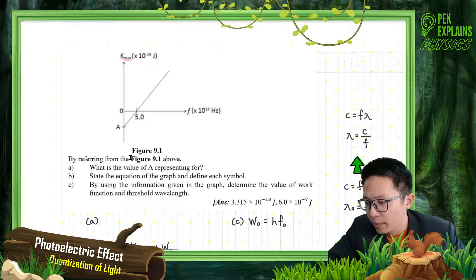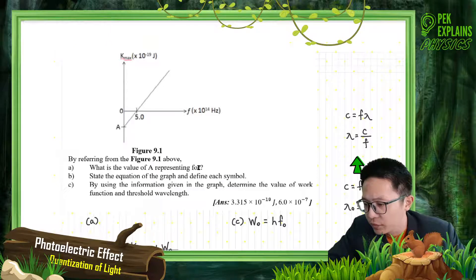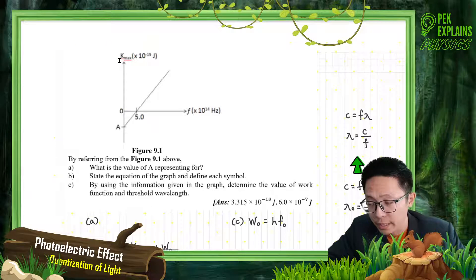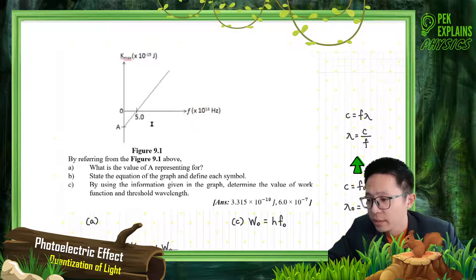By referring from figure 9.1 above, what is the value of A representing? This is a kinetic energy — maximum kinetic energy with frequency graph. Still remember what this is?